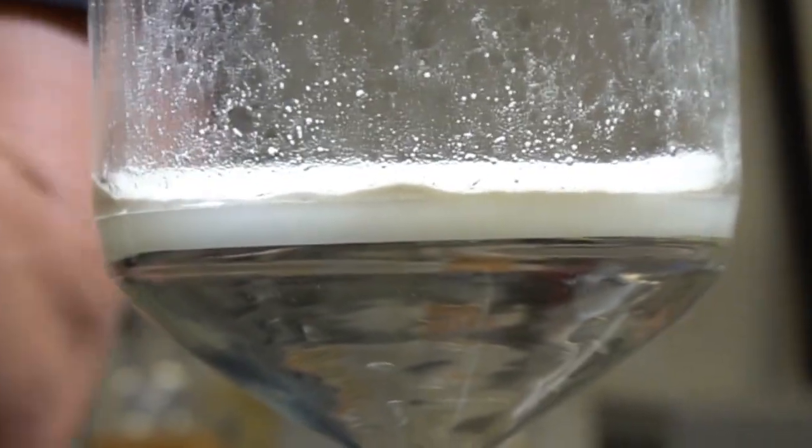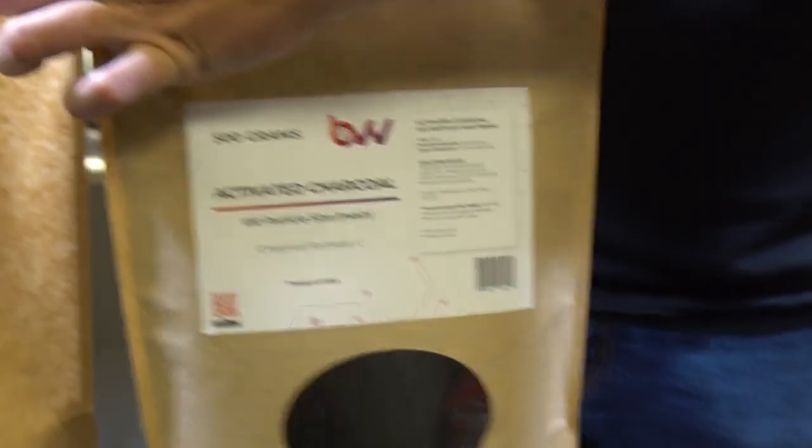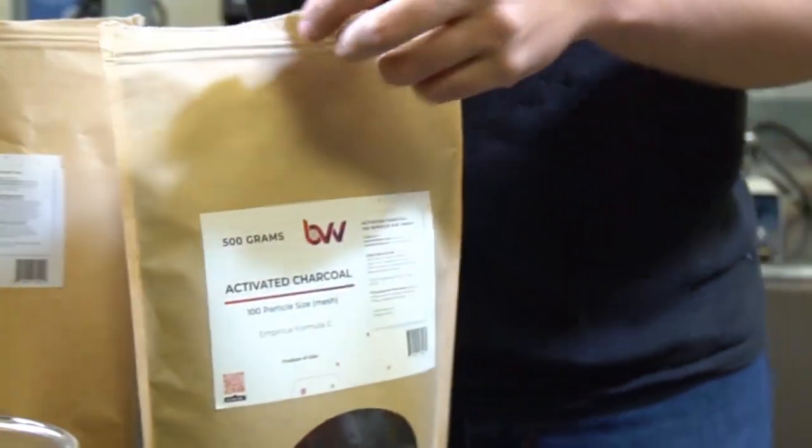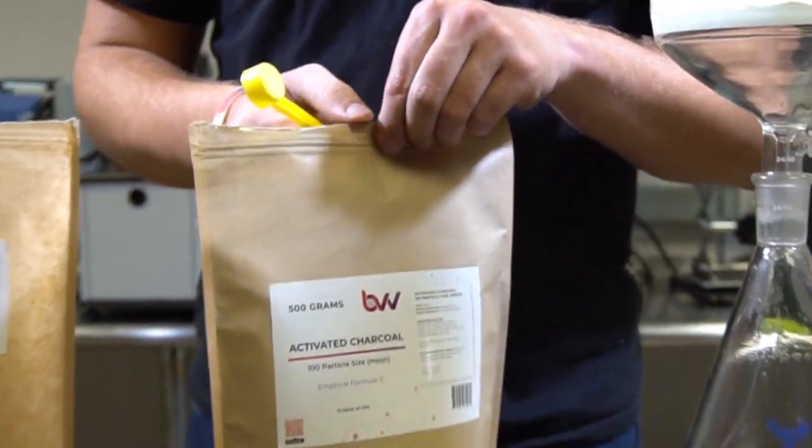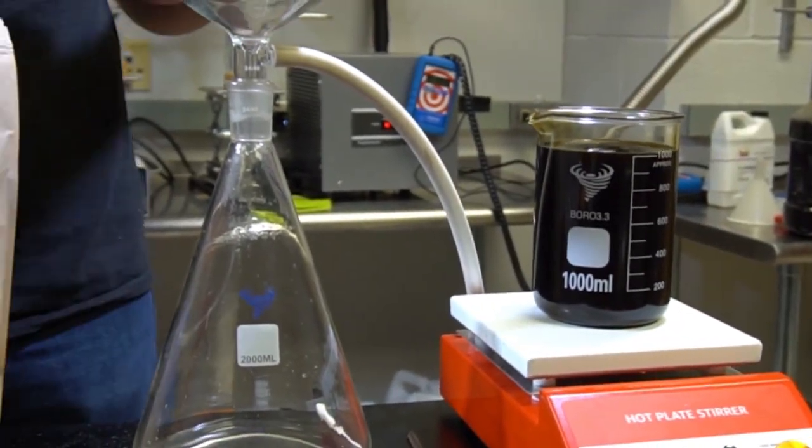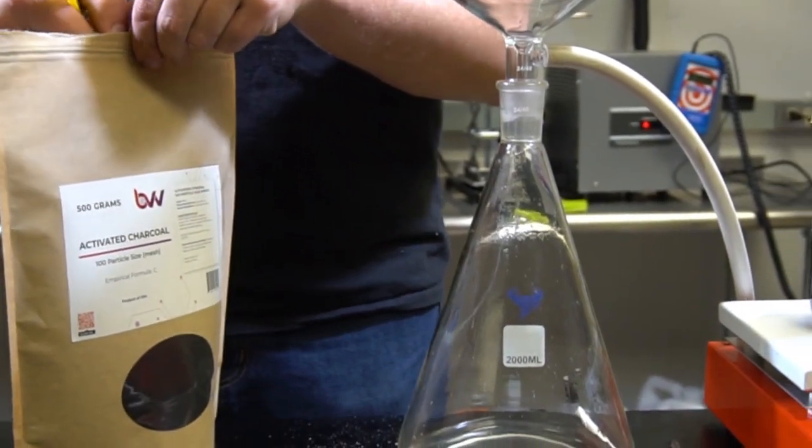Next I'm going to add some activated charcoal. You can add two scoops in this little scooper for every 250 milliliters of solution. Right here we have a thousand milliliters of solution. So I will put in eight scoops to my Buckner funnel.